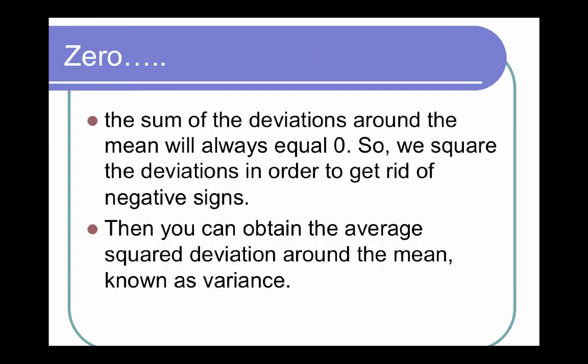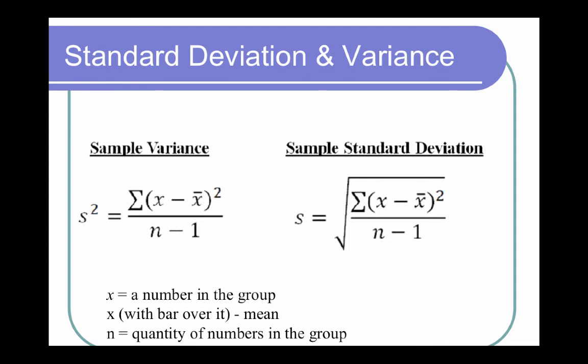We want to know how they vary, and so if we've got a number that is a zero, that is not helpful. So, because the sum of deviations will always equal zero, we have to square them in order to get rid of the negative signs, and this is going to give our variance more pop. We're going to be able to make sense of it. So then you can obtain the average squared deviation around the mean, and that is known as variance. So you have to square those numbers.